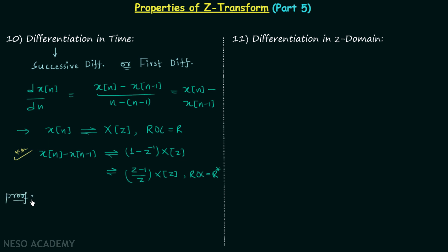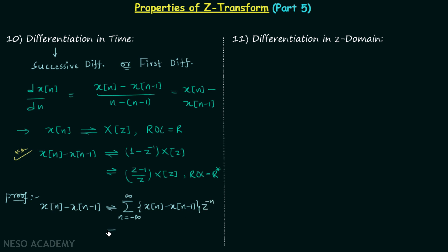So this property is called the differentiation in time property of Z transform, and now we will prove it. The proof is very simple — we are required to calculate the Z transform of x[n] minus x[n-1]. The Z transform will be equal to the summation from n equals minus infinity to plus infinity. Opening the bracket, we have the summation of x[n] multiplied by Z to the power minus n.